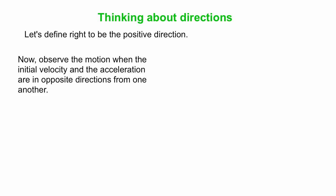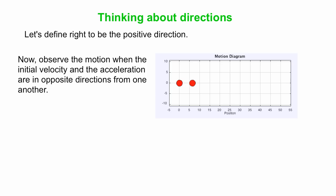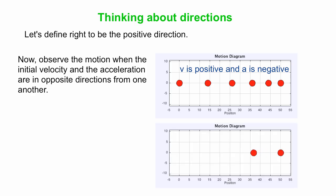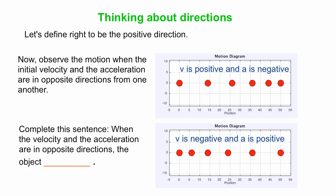What if both the acceleration and velocity are negative? In that case, the initial velocity is directed left and the acceleration is also directed left — both in the negative direction. It's really a mirror image of what we saw before; the dots in the motion diagram get further and further apart. Now let's look at the case when the velocity and acceleration are in opposite directions. When the initial velocity is to the right but the acceleration is to the left, the dots in the motion diagram get closer and closer together. Similarly, when the initial velocity is to the left but the acceleration is to the right, the dots also get closer together. So when the velocity and the acceleration are in opposite directions, the object slows down.